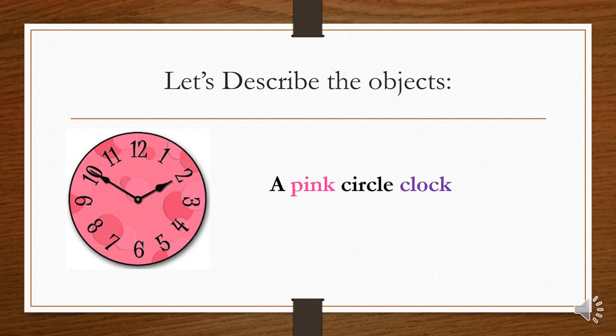So when you want to describe this object, you can use this simple sentence: a pink circle clock. Together children.